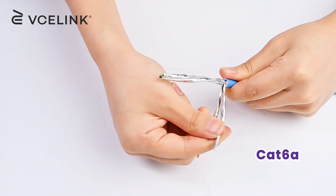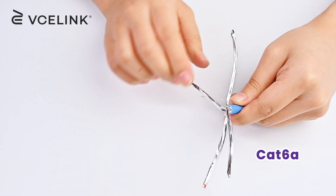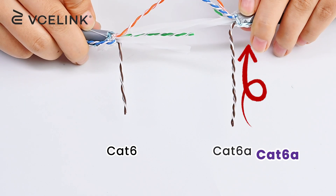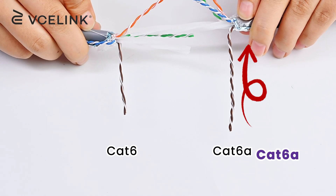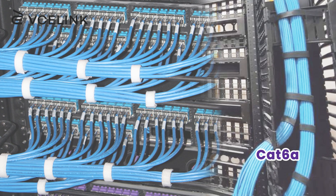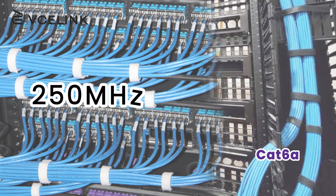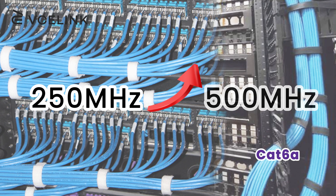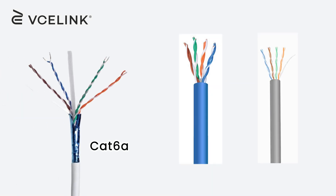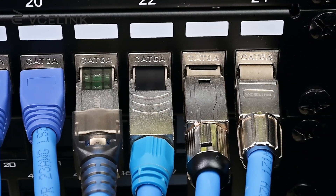CAT 6A Ethernet cables mean the augmented CAT 6 cables. The CAT 6A cable often consists of tighter twisted pairs compared to CAT 6 cables to avoid crosstalk interference. It has a transmission bandwidth ranging from 250 MHz up to 500 MHz frequency. CAT 6A Ethernet cables are backward compatible with CAT 6 and CAT 5E connectors, keystone jacks, and so on.